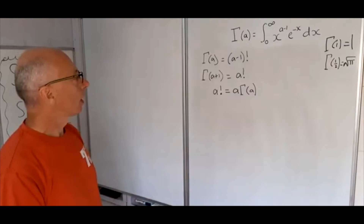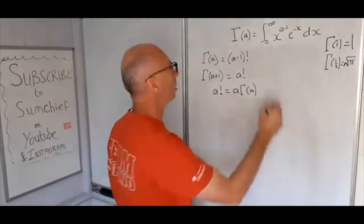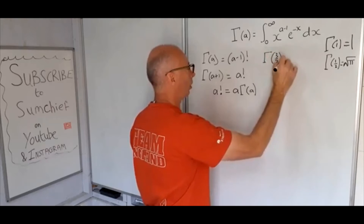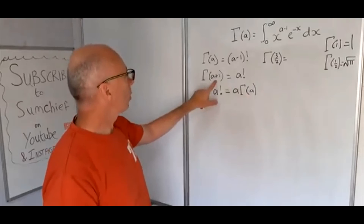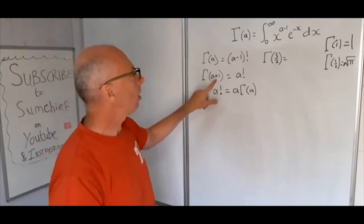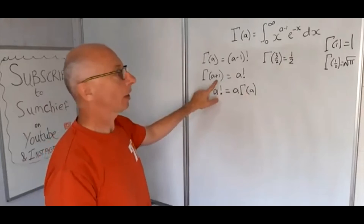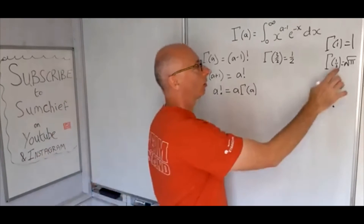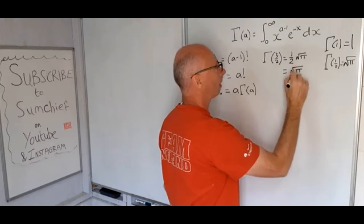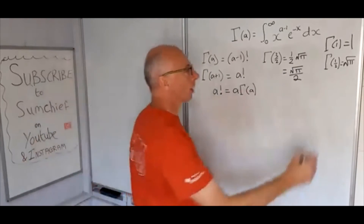Let's use this property to compute gamma of 3 over 2. We write 3 over 2 as one half plus 1, so a equals one half. Using the recursive property, gamma of 3 over 2 equals one half times gamma of one half, which is one half times square root of pi. So gamma of 3 over 2 equals root pi over 2 — no integration needed.